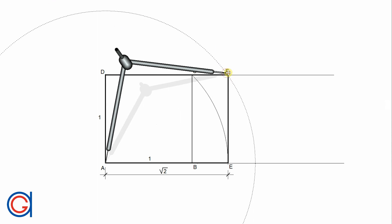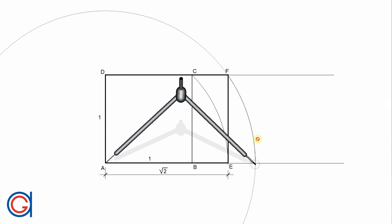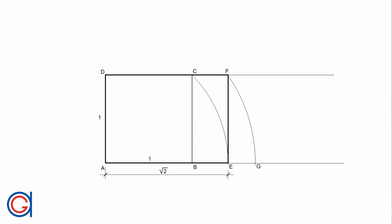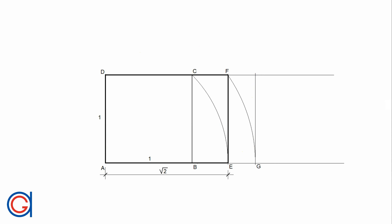To continue, setting the compass on vertex A and with a radius AF, we are going to describe an arc to the right until it cuts the bottom horizontal line at a new point, which we will call G. Now we are going to draw a perpendicular vertical line from point G, obtaining a new vertex H of the root 3 rectangle. We will mark this new rectangle in a thicker line. This root 3 rectangle is AGHD.